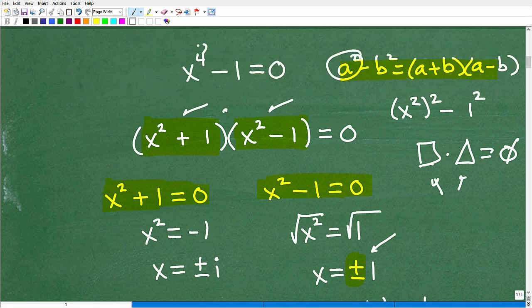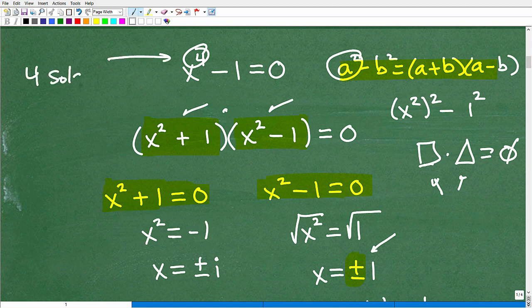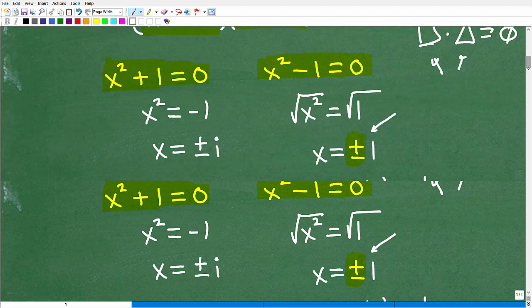Do not forget that little positive and negative sign because this is two separate roots. X is equal to a positive 1 and a negative 1. These are two of the four solutions I'm looking for. We just found two. We got 1 and negative 1. So far so good.